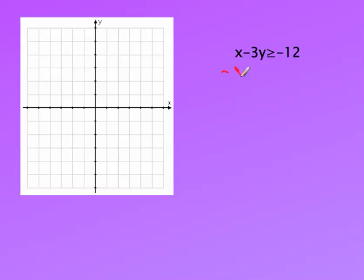So we're going to subtract x first. That gives us negative 3y is greater than or equal to negative x minus 12.